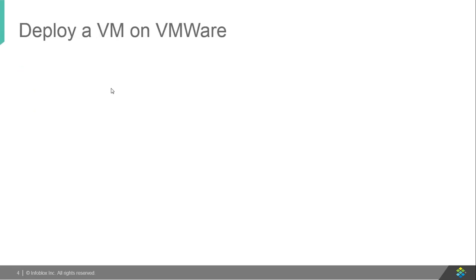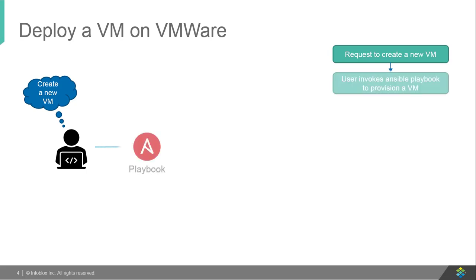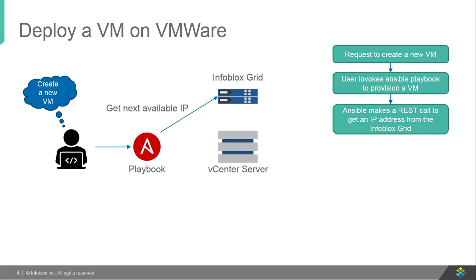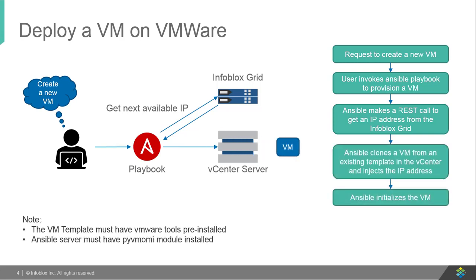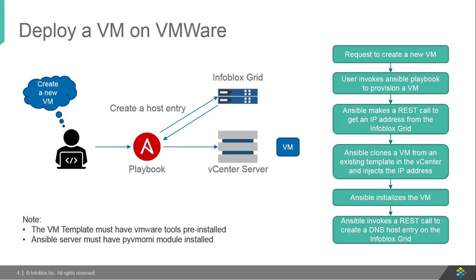Now let's quickly look at the workflow to understand the various moving parts. First, the user invokes an Ansible playbook. Post-invocation, the playbook makes a REST call to get an IP address from an Infoblox appliance. Ansible then clones a VM from an existing template and injects the IP address obtained from the previous step. After injecting the IP address, Ansible initializes the VM. Post-successful initialization, Ansible makes another REST call to create DNS records for this VM in the Infoblox grid.